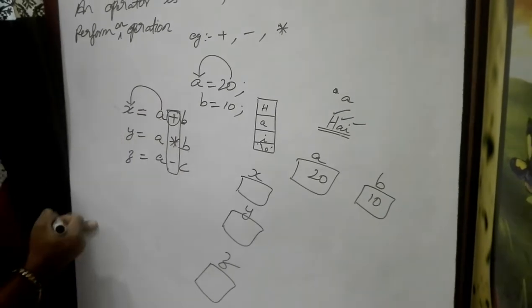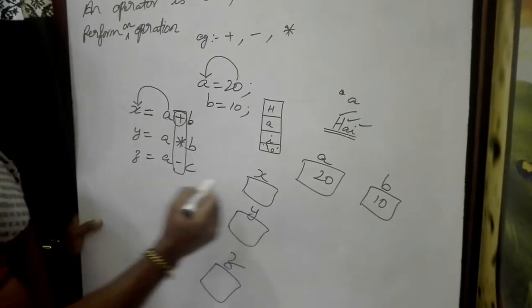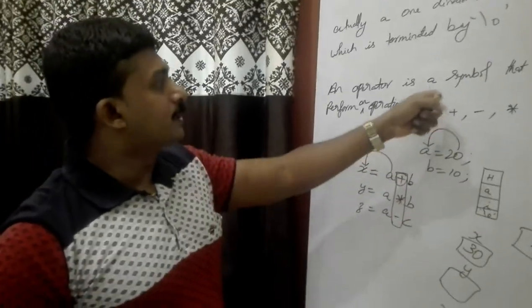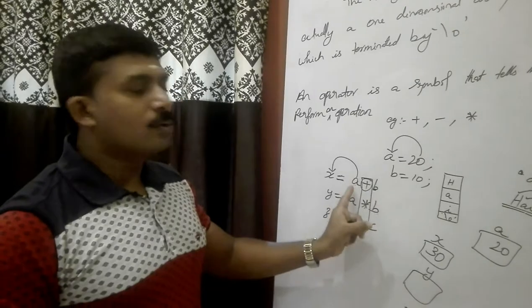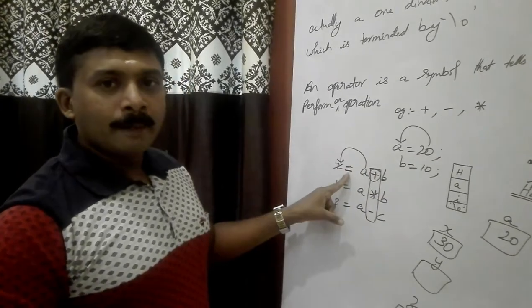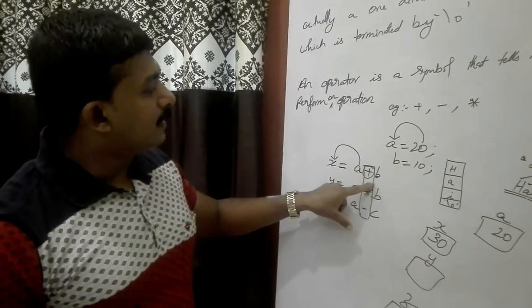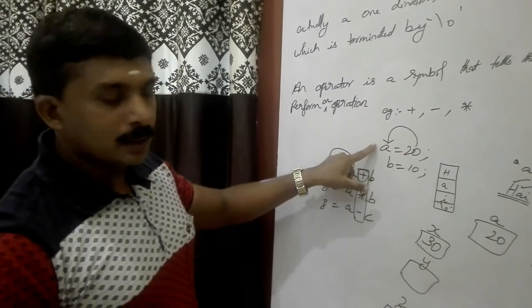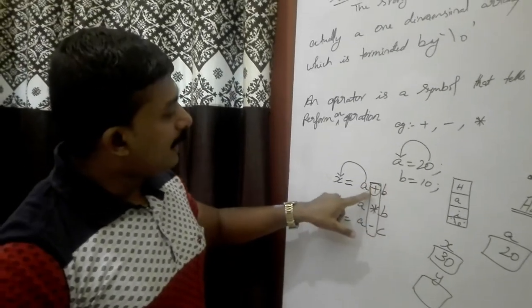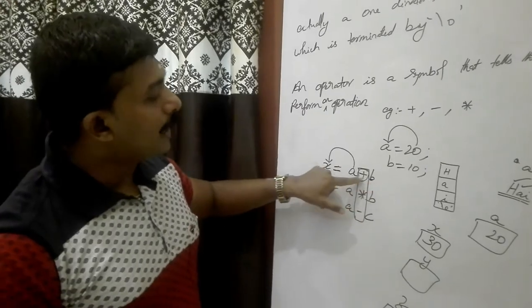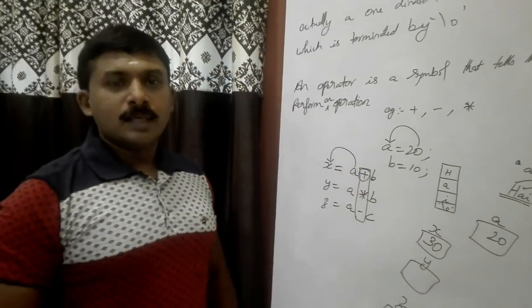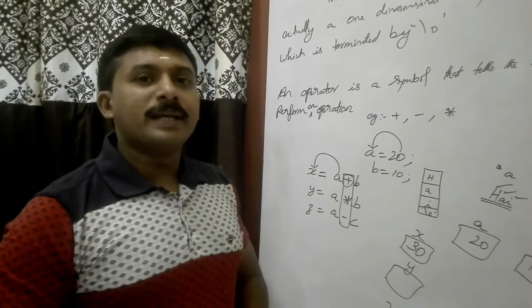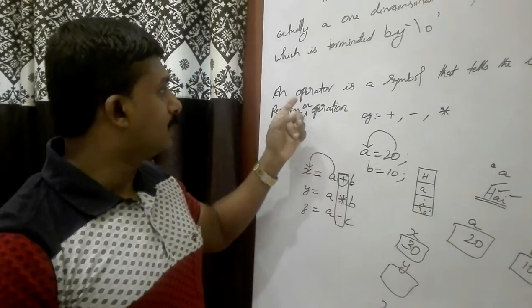So, the plus symbol tells the compiler to perform addition. For example, if A value is 20 and B value is 10, then 20 plus 10 equals 30. The assignment operator assigns the right-side value to the left-side variable.